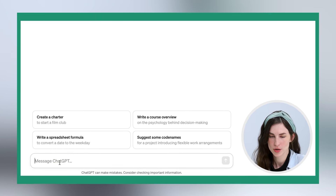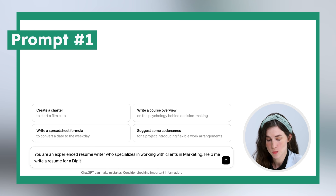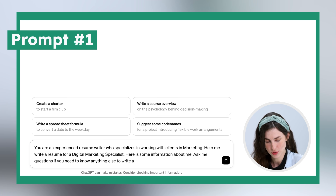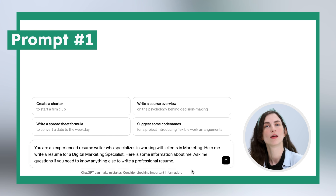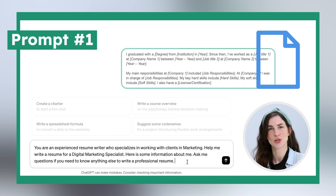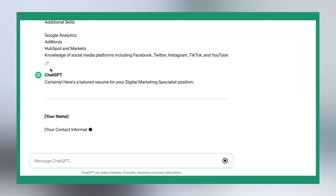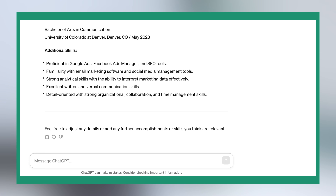Here's our first prompt: 'You're an experienced resume writer who specializes in working with clients in marketing. Help me write a resume for a digital marketing specialist. Here's some information about me. Ask me questions if you need to know anything else.' Fill in your details, and paste a resume example at the end. You should now have a basic resume, but consider this a rough draft — ChatGPT doesn't know your accomplishments like you do, and it'll take some fine-tuning to get your resume to the level of impact and specificity it deserves.